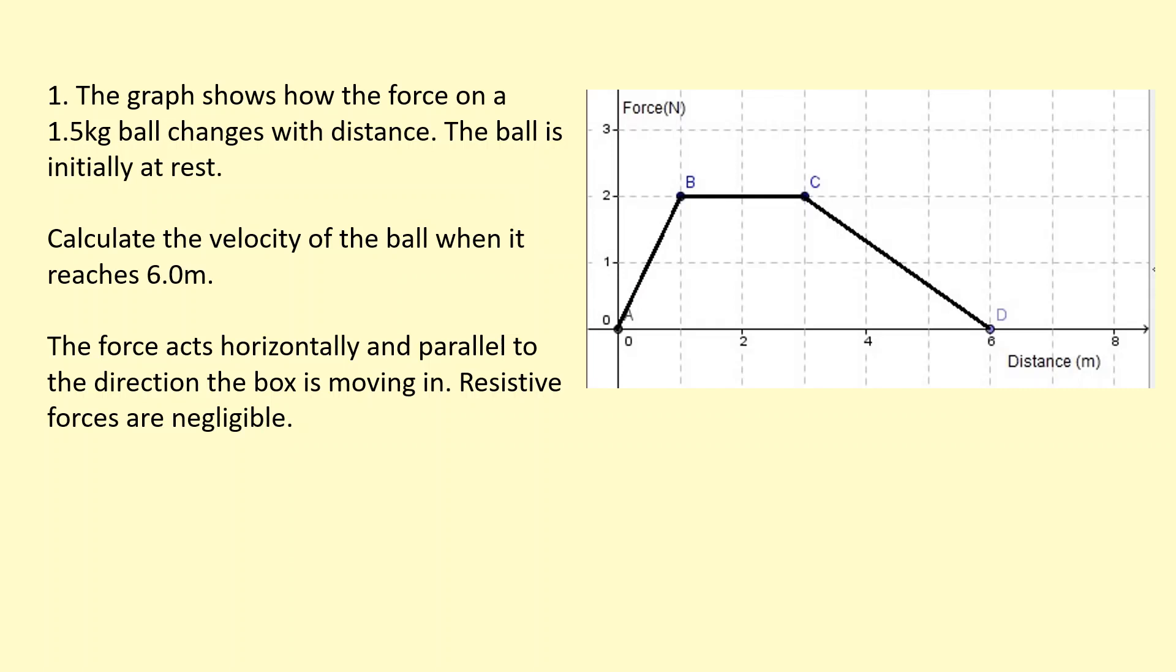The graph shows how the force on a 1.5 kilogram ball changes with distance. The ball is initially at rest. Calculate the velocity of the ball when it reaches 6.0 meters, so all the way down to the end here. The force acts horizontally. That means we can ignore any gravitational potential energy in our equations, because for the gravitational potential energy change, the box needs to be moving up or down—in other words, vertically—and it's not.